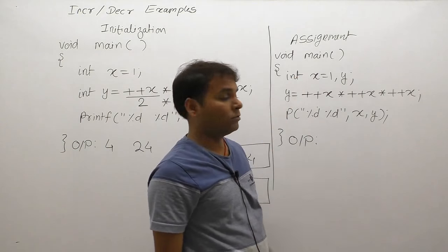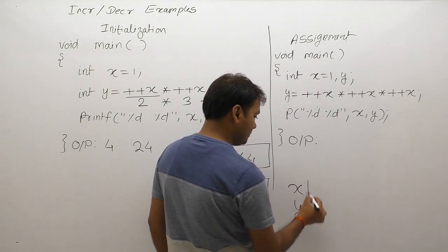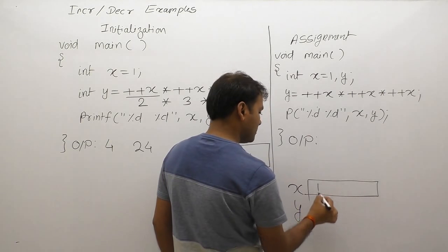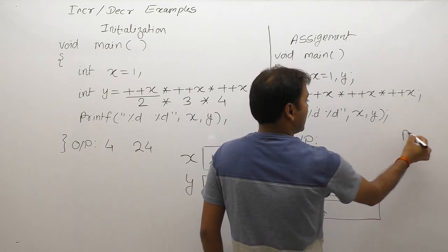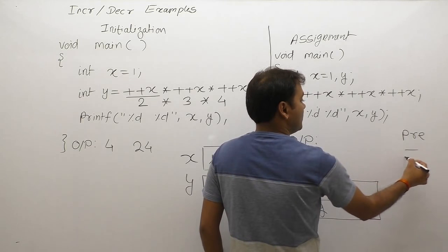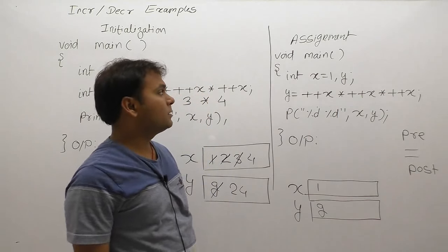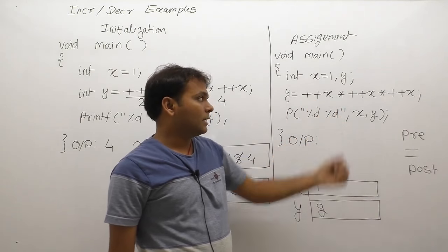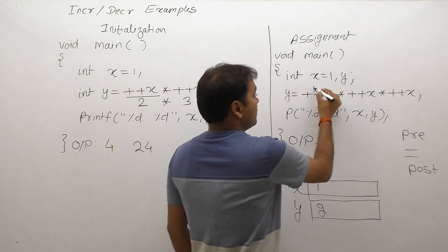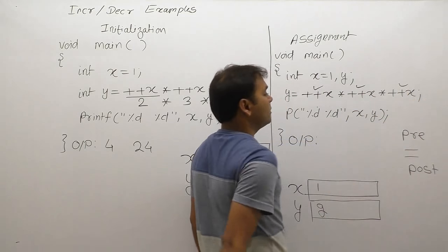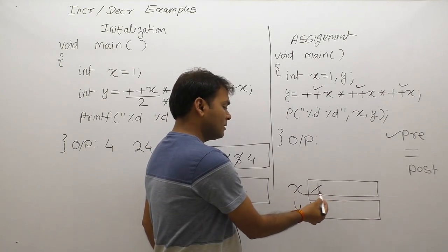Next, the same example but following the assignment rule. Memory allocation for x and y: initial value of x is 1, initial value of y is garbage. According to the assignment rule, perform all pre operations first, then assignment, then post. Total pre operations in this case: there are three pre increments, so x becomes 1 plus 3 equals 4.